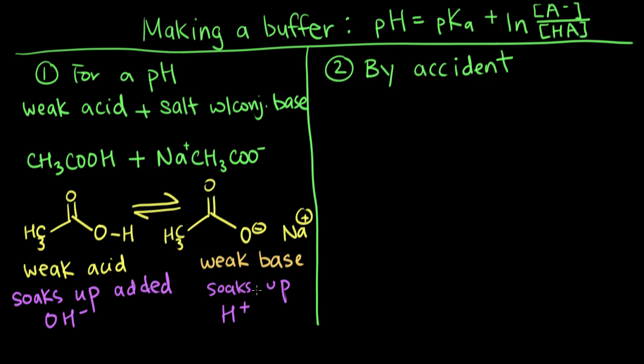You want a specific buffer with a specific pH. So you might use the Henderson-Hasselbalch equation, and you'll say, okay, I want a pH of 4, and then we'll look at different salts and their pKa, and then we'll adjust these concentrations to get the pH that we want.